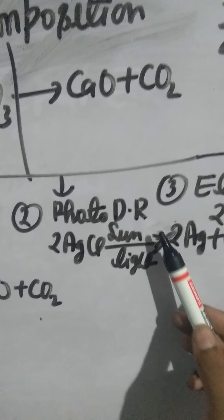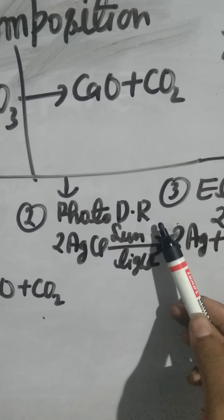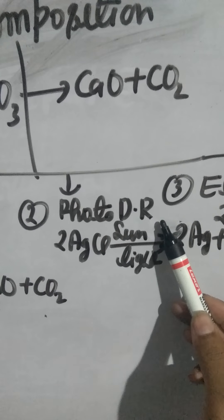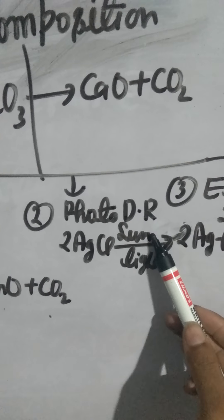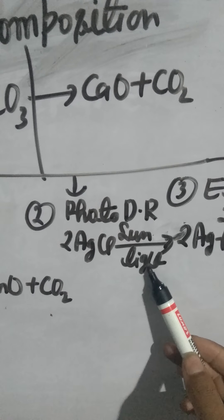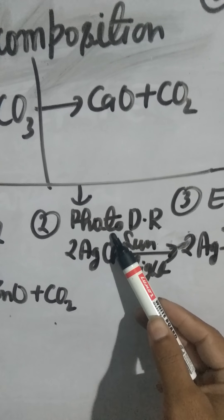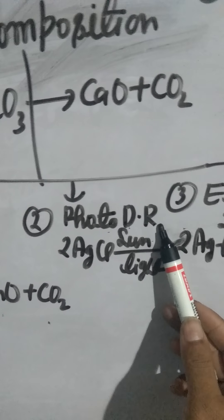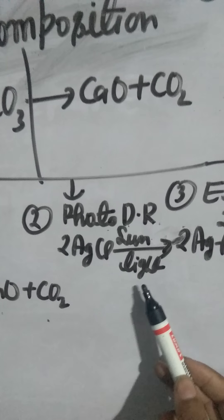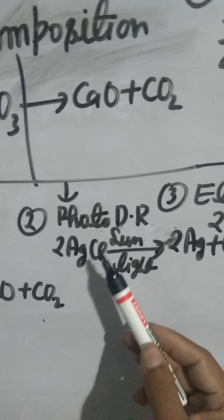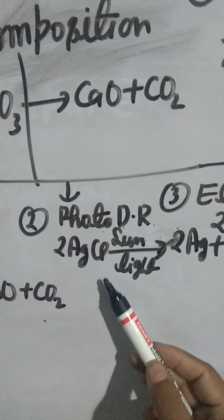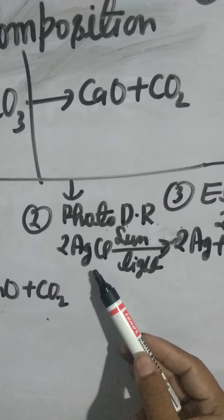Number two: photo decomposition reaction. Photo means light. A decomposition reaction which takes place by light is called a photo decomposition reaction. For example, 2AgCl in sunlight gives 2Ag plus Cl2.